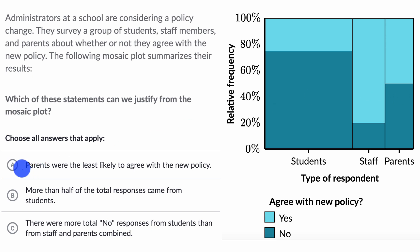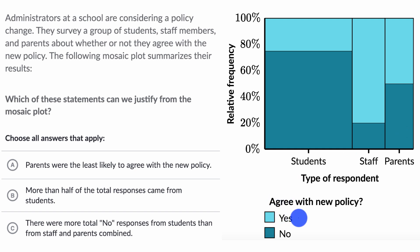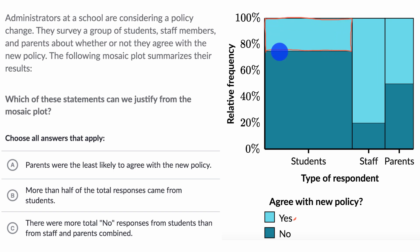Let's see which of these statements are consistent with what we just looked at. First: parents were the least likely to agree with the new policy. No, that's not true. The least likely to agree with the new policy are students — they were definitely the least likely. The lowest percentage of students are agreeing with the policy, so I don't like that choice.